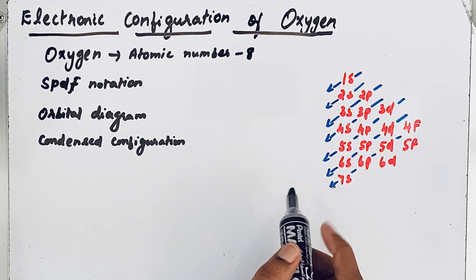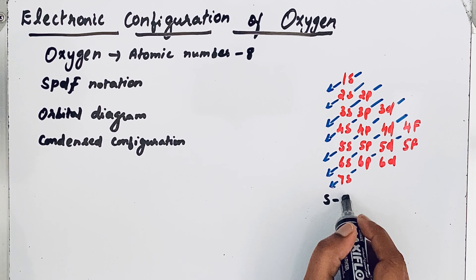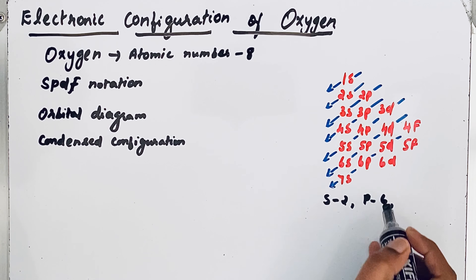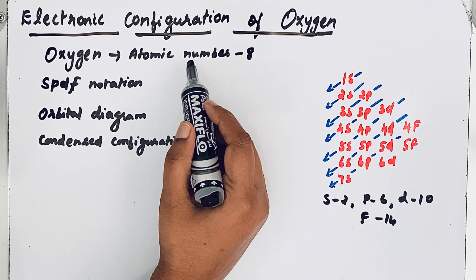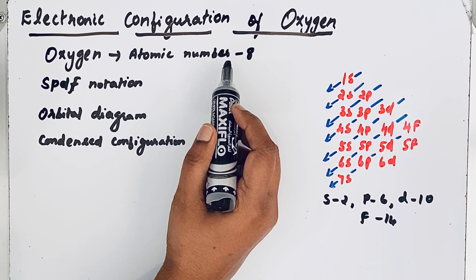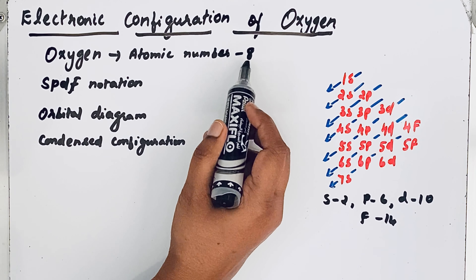The maximum number of electrons in the s orbital is 2, in p orbitals is 6, in d orbitals is 10, and in f orbitals is 14. Oxygen is a neutral atom, so the number of electrons is equal to its atomic number — that means equal to the number of protons, which is 8.